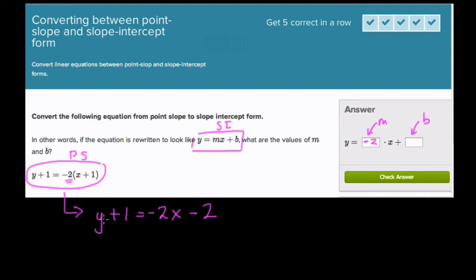To get a y equals mx plus b format, we simply have to isolate y by subtracting 1 on both sides. And look what happens. 1 minus 1 is 0, so just y is left. We have negative 2x, right, minus 3.